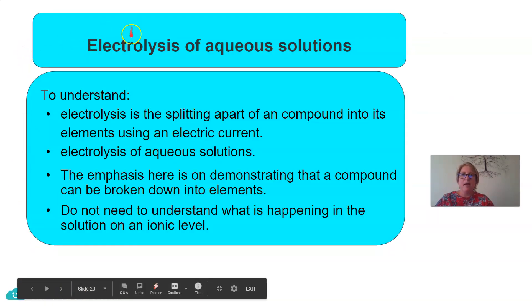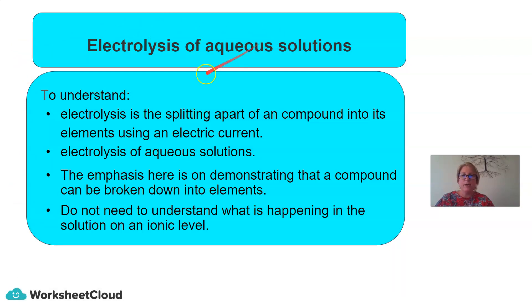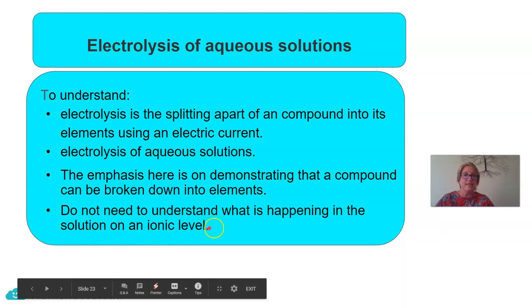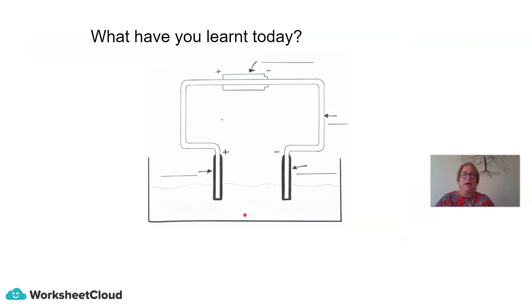So just to sum up, electrolysis of aqueous solutions. Hopefully now you understand that electrolysis is the splitting apart of a compound into its elements using an electric current. We looked at electrolysis of an aqueous solution and hopefully you understood that I was trying to demonstrate that a compound can be broken down into its elements. Just a reminder, you do not need to understand what is happening in the solution at an ionic level. I think it would be a good idea if you can refer back to this diagram and fill it in as much as possible.